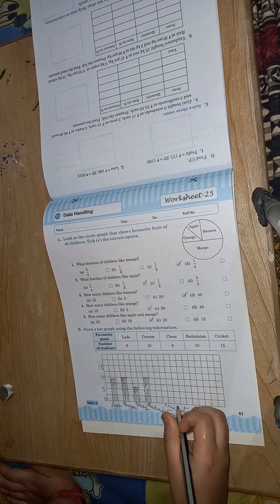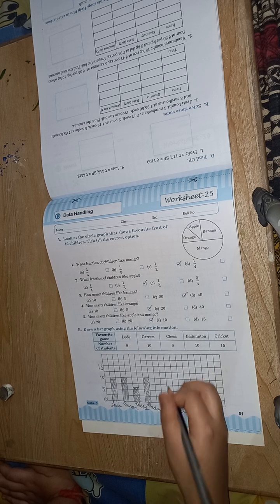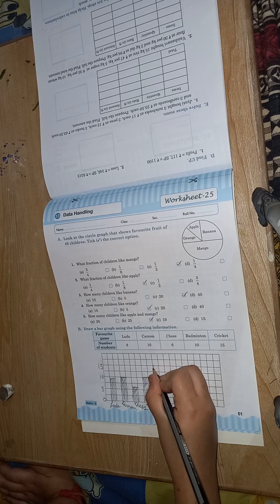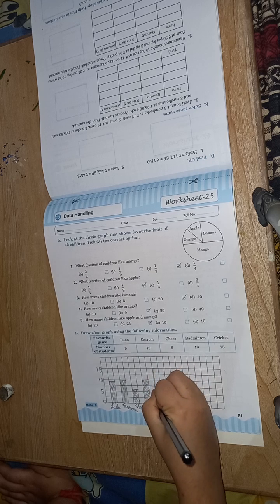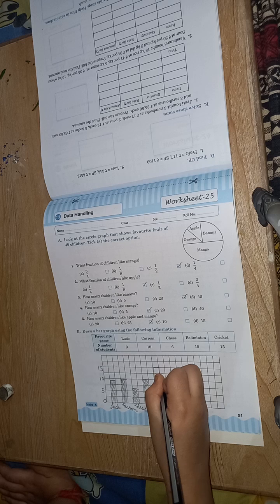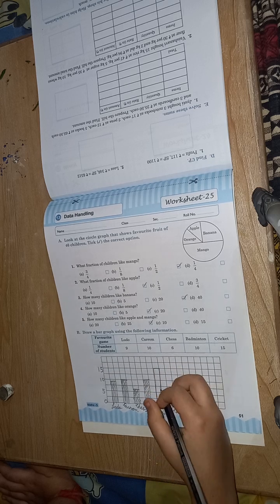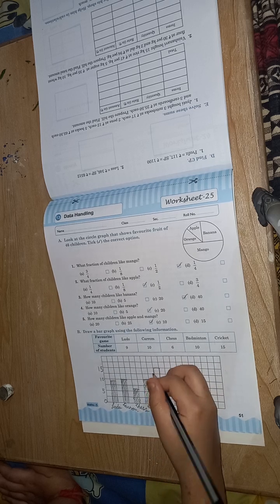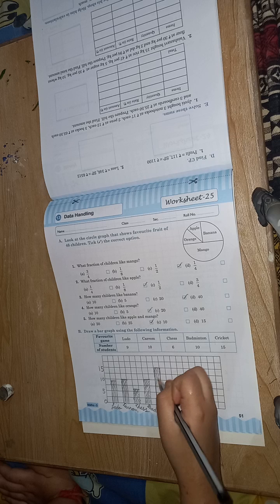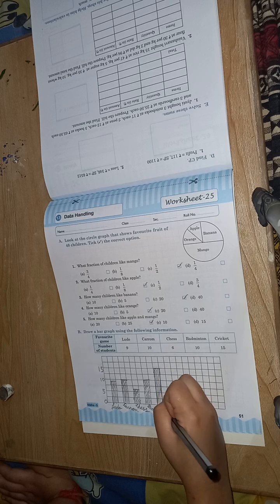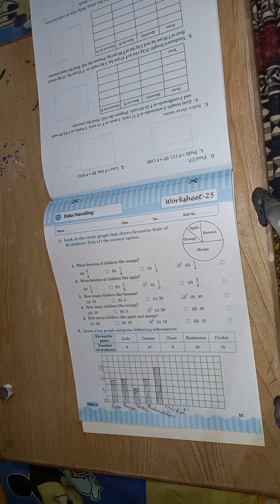Cricket. Fifteen, fifteen, fifteen. Sixteen, sixteen, seventeen. Nineteen.